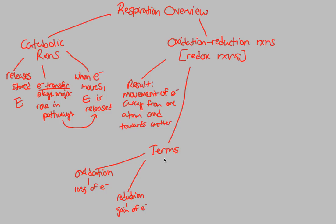We can also look at the term redox in more detail. Redox exists because an electron cannot exist in a free state in living cells. This is a bad situation for any cell because a free-floating electron can cause havoc, causing many problems. So when we have an electron going through a process, it's either going to be lost or gained — never in a free state. Redox ensures the electron is always part of either oxidation or reduction, never anything in between.